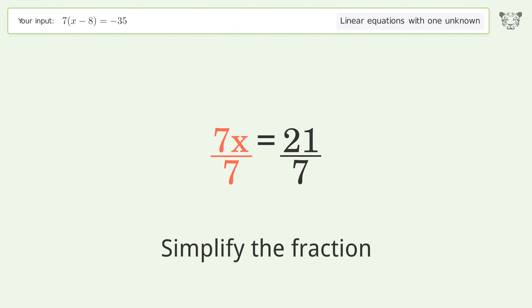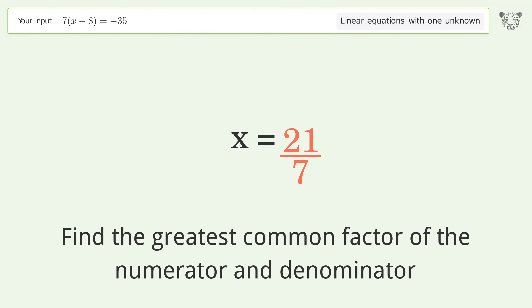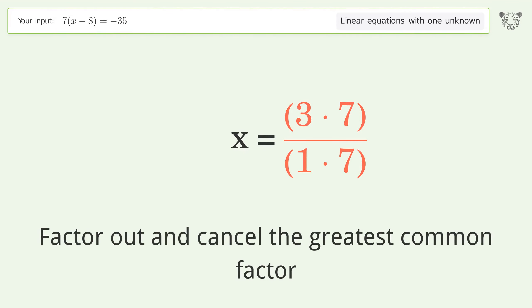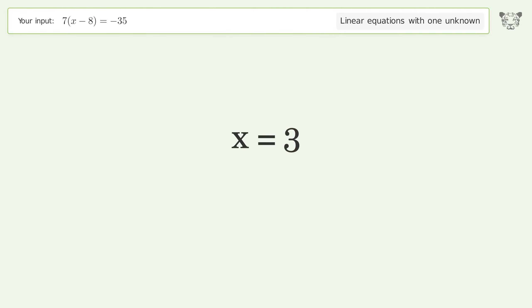Simplify the fraction. Find the greatest common factor of the numerator and denominator. Factor out and cancel the greatest common factor. And so the final result is x equals 3.